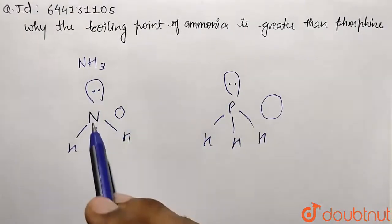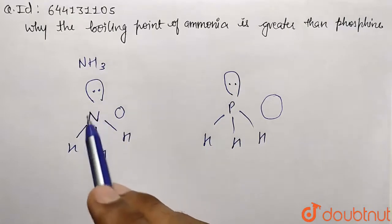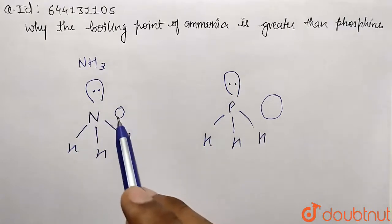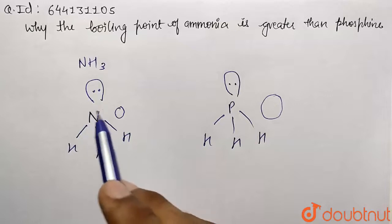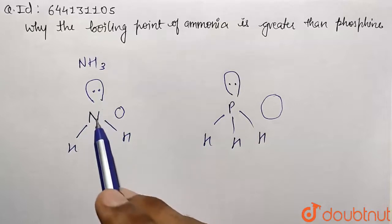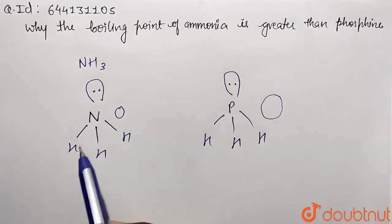So the reason is very simple. Why? Because nitrogen is more electronegative and the electron density is more due to its smaller size, so correspondingly it is also going to show hydrogen bonding interaction with the hydrogen atoms of other NH3 molecules.